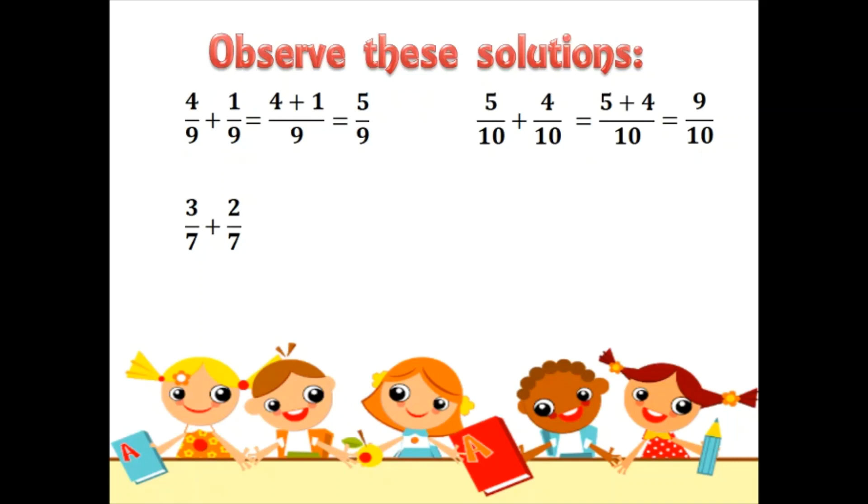3 by 7 plus 2 by 7. Here also the denominator is same, 7. So you will add 3 and 2 and write the denominator as it is. The answer will be 5 by 7.